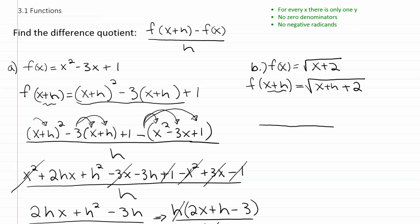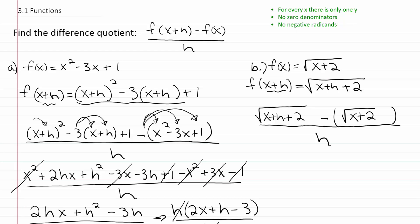So we're going to use a fraction, with a minus on the top, a parenthesis to hold the original function, and an h in the denominator. In the first position, we'll put the f of x plus h we found: the square root of x plus h plus two, minus f of x, which is just the square root of x plus two, all over h. Then we rewrite this as the square root of x plus h plus two, minus the square root of x plus two, over h.